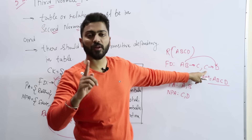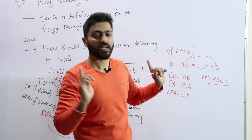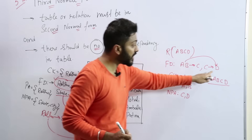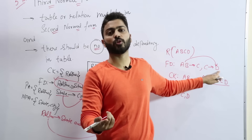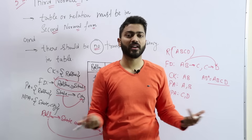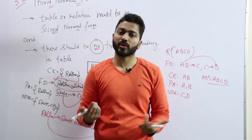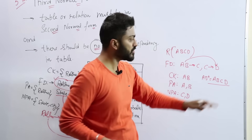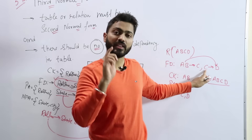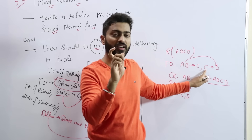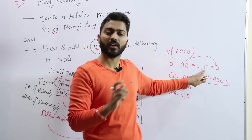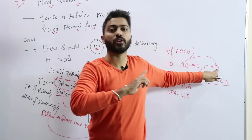If C were a prime attribute here, then there would be no problem. Similarly, if D were a prime attribute, there would also be no problem, because a prime attribute being determined by any attribute doesn't matter — it's already a prime attribute. But if a non-prime attribute is being determined by another non-prime attribute, this is the only case you need to remember: non-prime determined by non-prime is a violation; non-prime determined by prime — no problem; prime determined by non-prime — no problem.